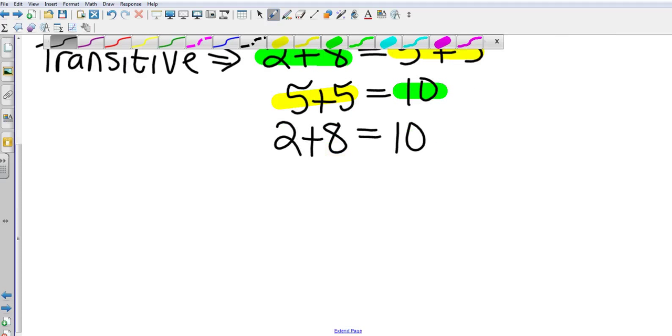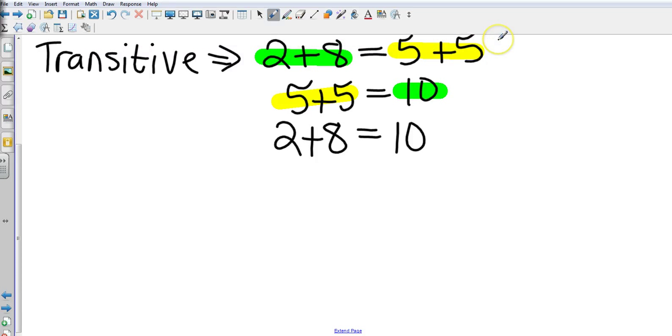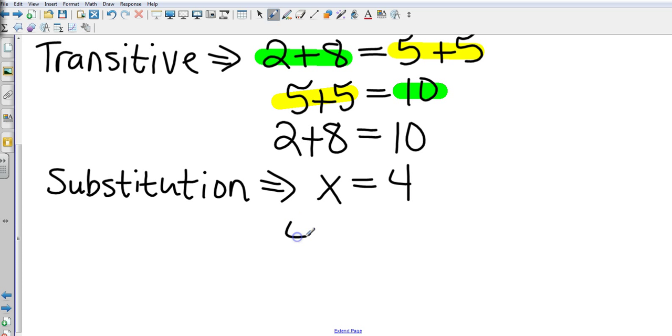And then finally, we're going to look at the substitution property. Substitution is what we use quite often. Substitution looks something like this. So if x equals four, then four x is equal to four times four. I'm just substituting in that value, giving me an answer of sixteen.